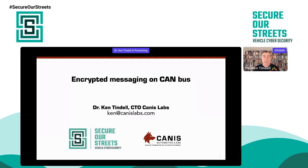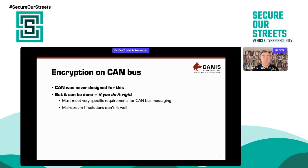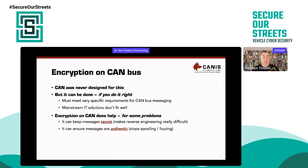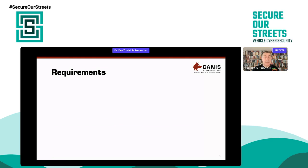I'm going to talk today about how to do encryption on CAN. CAN was never designed for this, but it can be done if you do it right. There are some very specific requirements for CAN. The mainstream IT solutions for encryption don't fit very well. Encryption on CAN does help for some problems — it can keep messages secret and ensure messages are authentic, which stops spoofing and fuzzing attacks. But it's not a complete CAN security solution; it doesn't prevent denial-of-service attacks, for example.